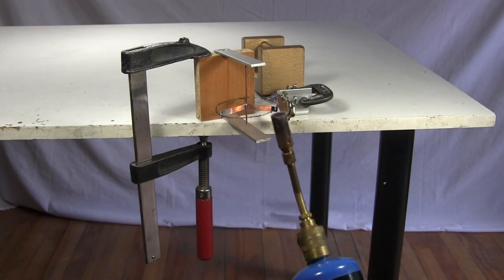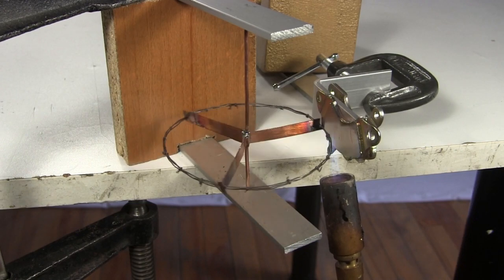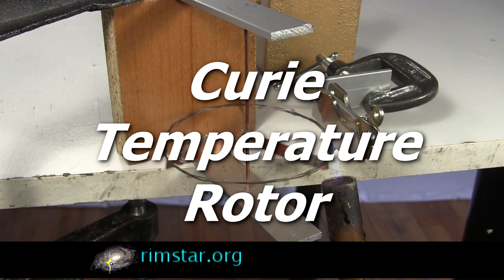Hi gang! This is a neat heat engine that uses the Curie temperature or Curie point and ferromagnetism to get rotation. I'll show you how I made it along with demonstrations along the way and an explanation of how it works.